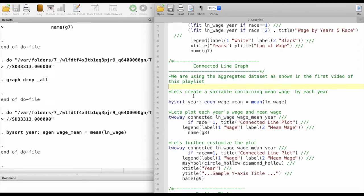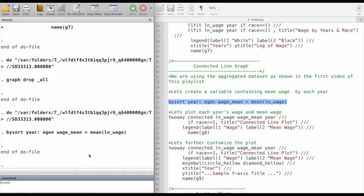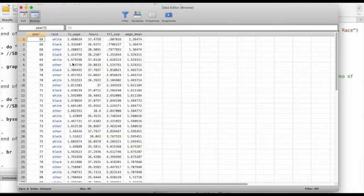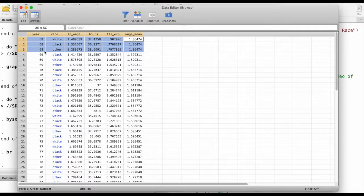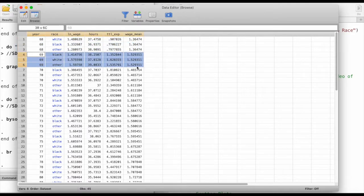The first thing we'll be doing is creating a variable containing mean wage by each year. If I run this command, we will get the mean of wage for each year in our dataset, which I've already done. So I can show you. We can see that we have the mean wage for each different year.